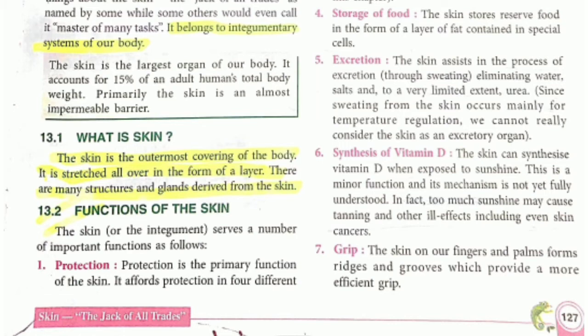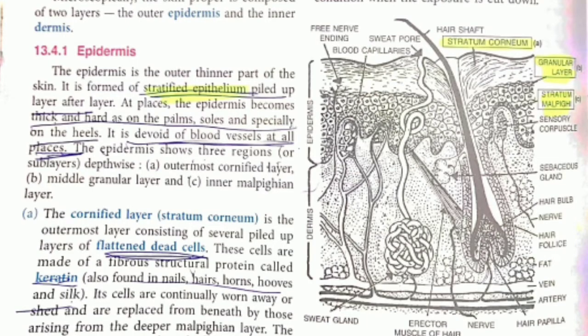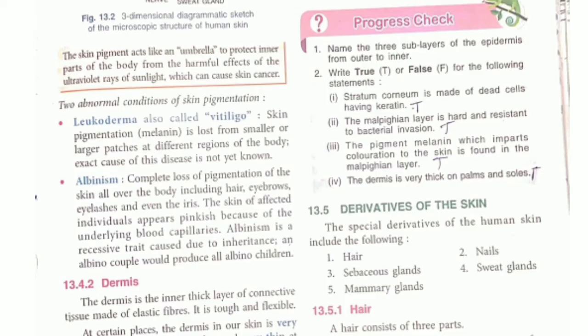Learn the structure of the skin — the epidermis: what is the epidermis, what is the Malpighian layer, and what is the cornified layer. Teachers mostly give diagrammatic-based questions, so don't forget to learn those diagrams. Also learn what is leucoderma and albinism and the difference between these two things.